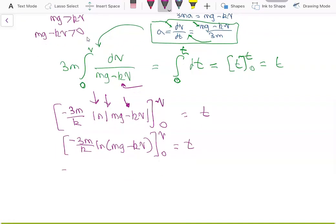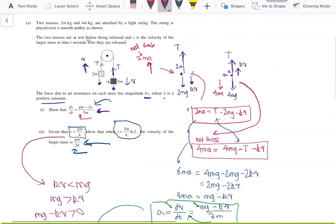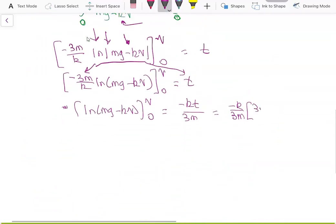Now we have, we can actually move this stuff over to the right hand side. So we have ln(mg minus kv) from 0 to v equals negative kt over 3m. And t was equal to 3m over k ln 2. And this is equal to, we just have cancellation, so negative ln 2, which is, using logarithm rules, we have ln of half.